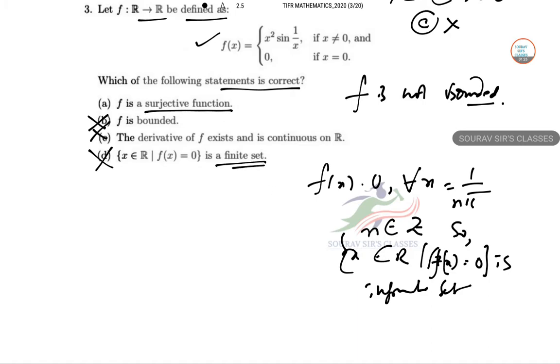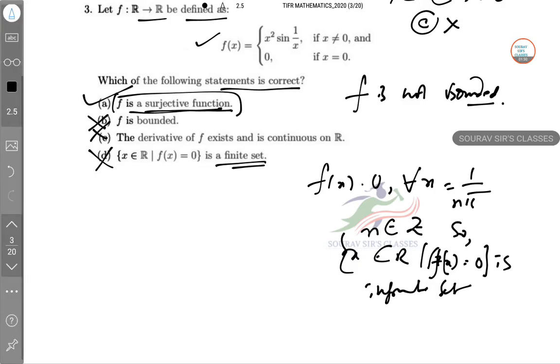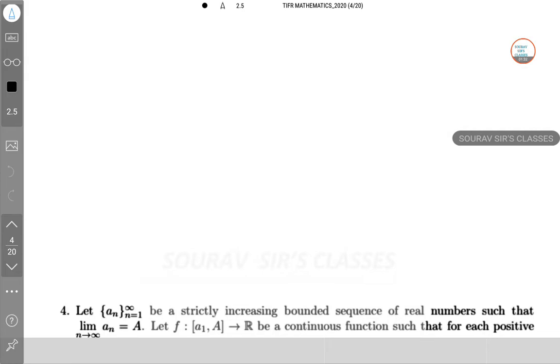So the only possible option will be it is a subjective structure. We can also show it by a one-to-one relationship. Next one.